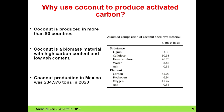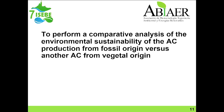For the raw material, we decided to use coconut shell for two reasons. First, its abundance — coconut is produced in more than 19 countries, and just in Mexico in 2020 the production was 2,034,066 tons. The other reason is its composition: coconut shell has a really high carbon content and low ash content, which are important characteristics for activated carbon raw material. The main objective of this work is to perform a comparative analysis of the environmental sustainability of activated carbon production from fossil origin versus activated carbon from vegetable origin.